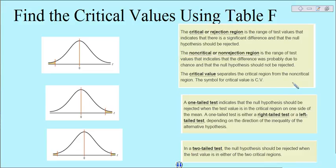The objective of this video is to help you understand how to use Table F to find the critical values when you're trying to determine whether or not you'll accept or reject your null hypothesis.